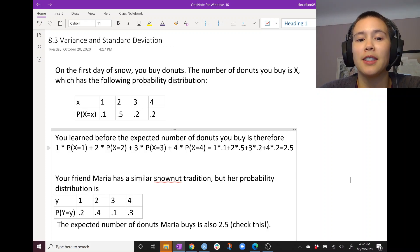Now imagine that your friend Maria has a similar snownut tradition, but her probability distribution is a little bit different. With probability 0.2 she buys one donut, with probability 0.4 she buys two donuts, with probability 0.1 she buys three donuts, and with probability 0.3 she buys four donuts. The expected number of donuts that you buy and that she buys is identical. Both are 2.5, which you can check on your own.